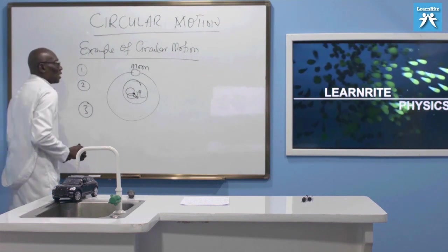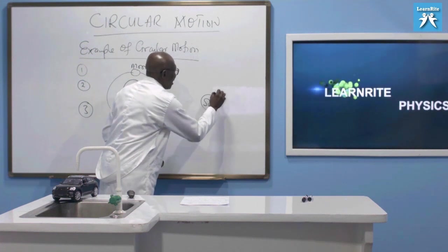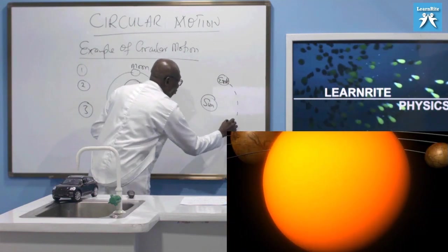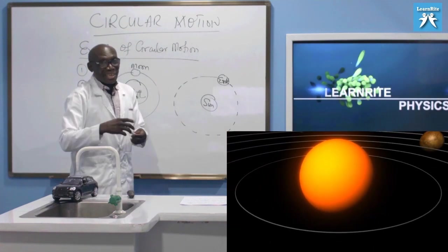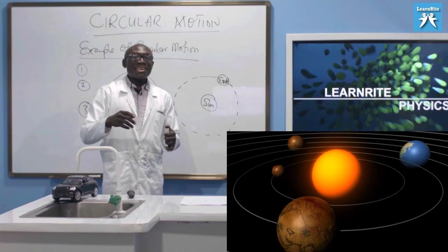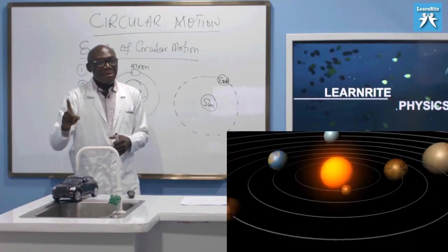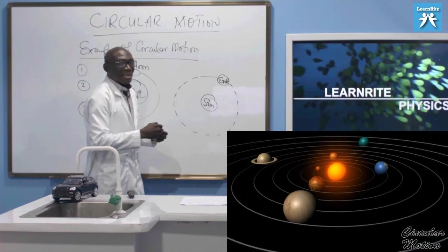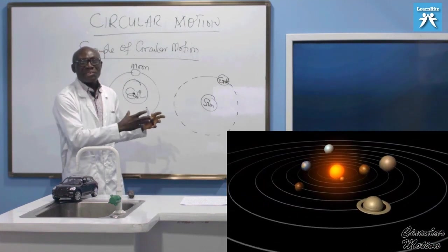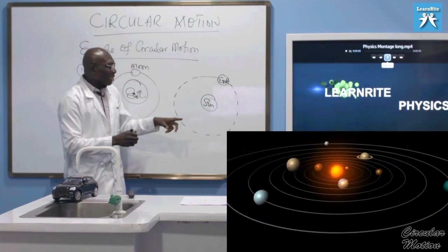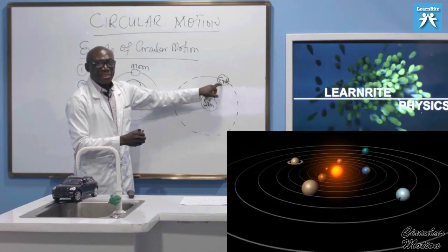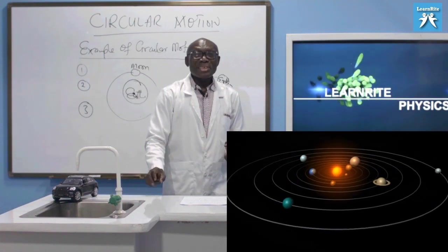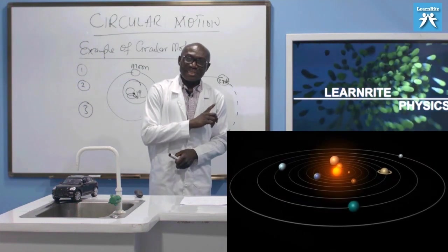The third example is the sun and the earth. We all know the earth goes around the sun, and it is assumed that the earth takes a circular path around the sun. The center is found where the sun is, but because we are looking at the motion of the earth, this center lies outside the earth. Therefore, the earth performs circular motion around the sun.